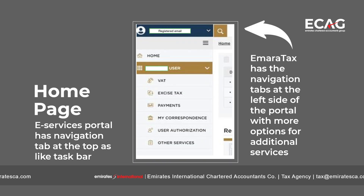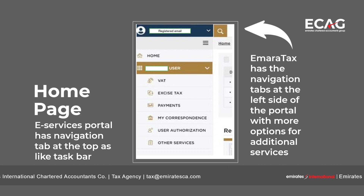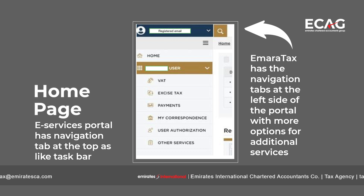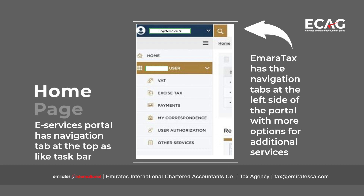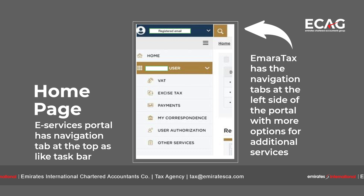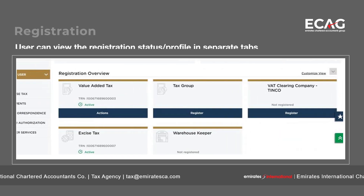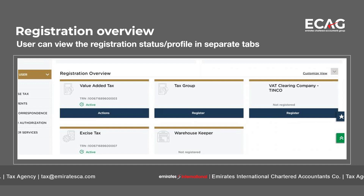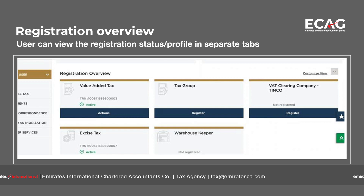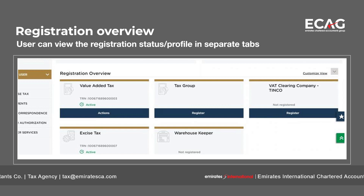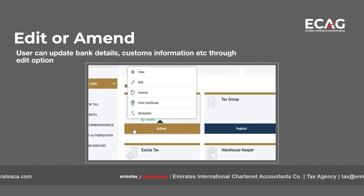Once you log in, you will see an entirely new home page, which is different from the e-services portal. On the left-hand side, you will see the user type, and under that you can see options like VAT, excise tax, payments, my correspondence, user authorization, and other services. These tabs help you quickly navigate to the required services. In the main page, you can see the registration overview showing VAT, tax group, excise tax, warehouse keeper, and other tabs. Under actions, you can view, edit, amend, deregister, or print a certificate.